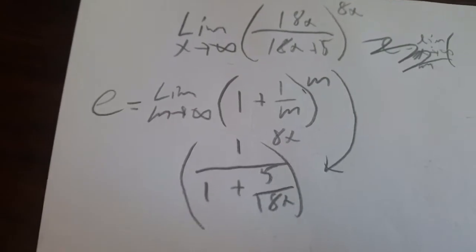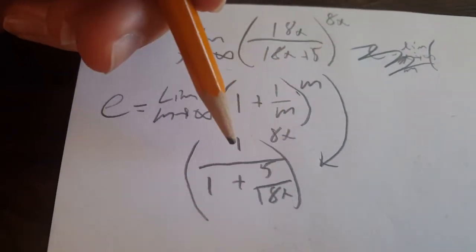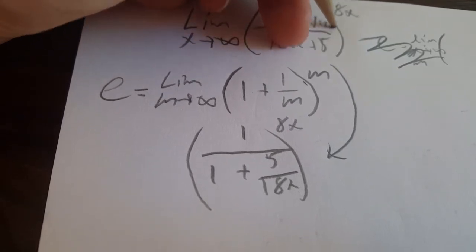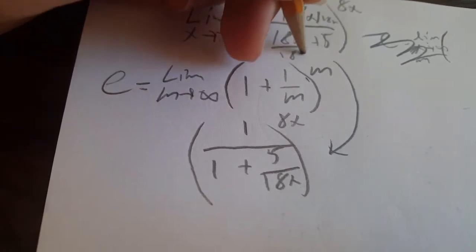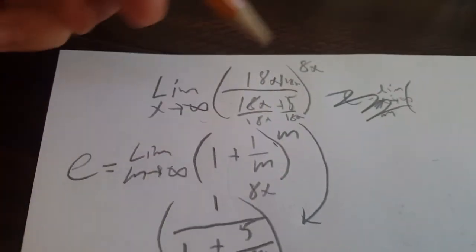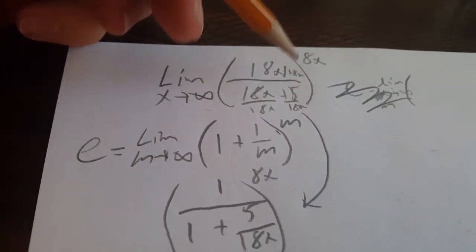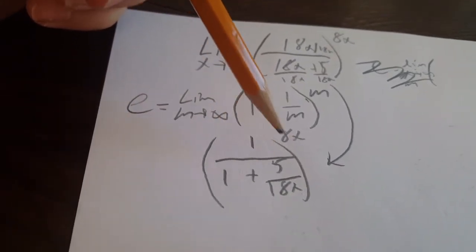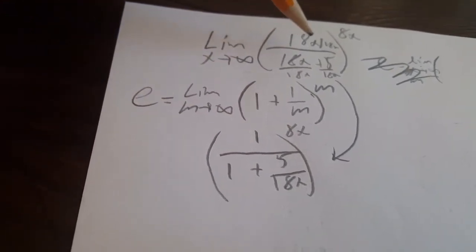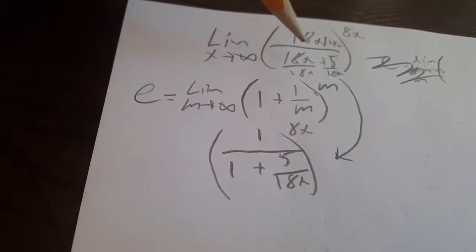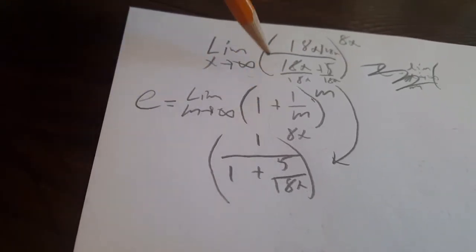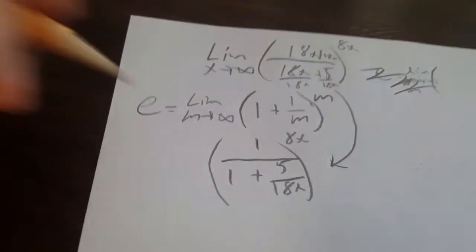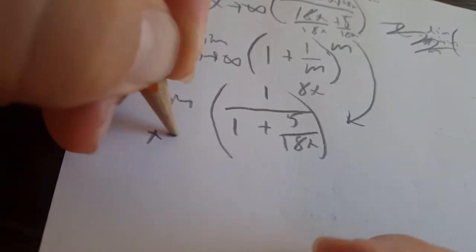So, the reason why I got there is by dividing 18x. You can do this because it's inside an argument. You don't have to do anything to this. So yeah, that's how you get that, because 18x over 18x is equal to 1. This is equal to 1. This is just 5 over 18x.